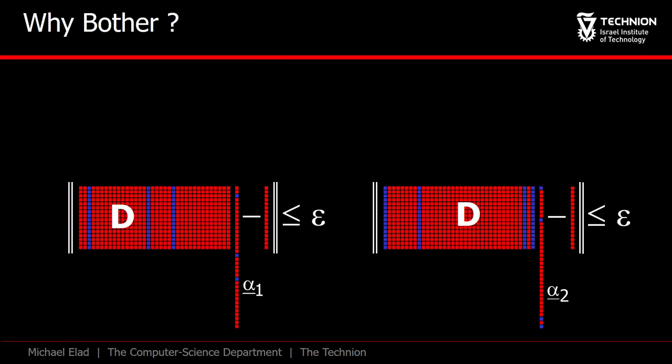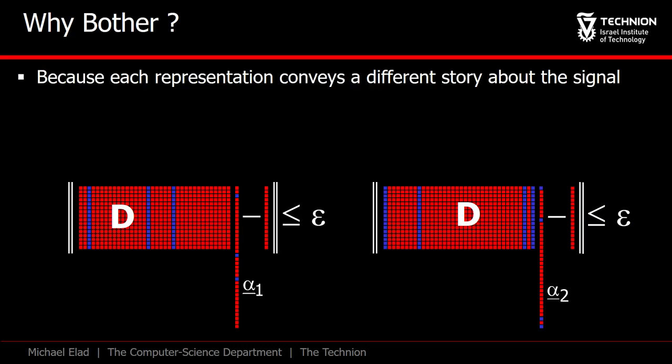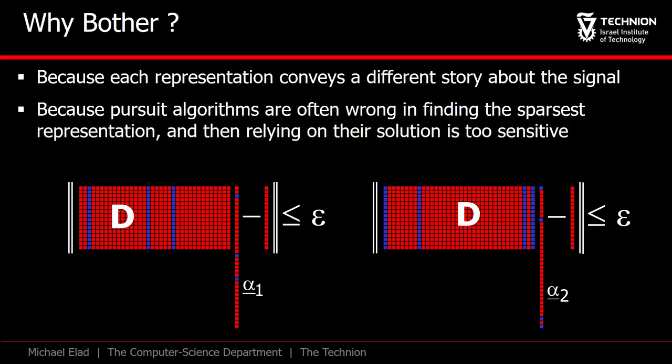You might wonder why we are bothering with this bizarre idea. What if two sparse solutions could be proposed for the same signal z? Well, each of these solutions has a different story to tell us, and perhaps this could be leveraged to denoise z better. Maybe this could serve as some sort of protection from the tendency of pursuit algorithms to make mistakes? And then again, maybe there are deeper reasons for all of this?